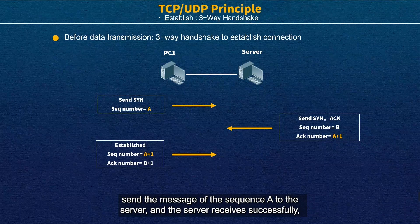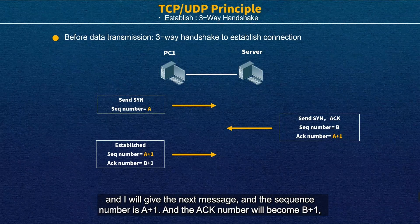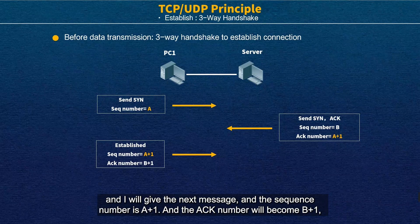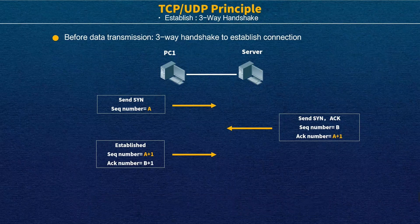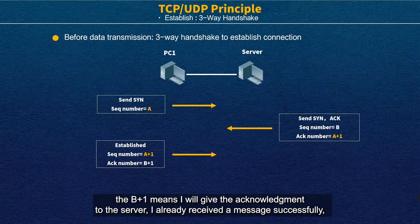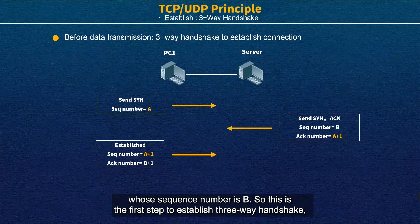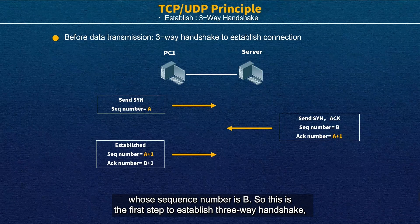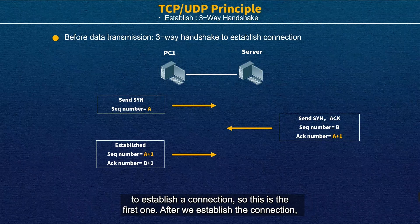The server received the message successfully. PC1 will give the next message with sequence number A+1, and the ACK number will become B+1. B+1 means the acknowledgement to the server: 'I already received your message with sequence number B successfully.' So this is the first step — the 3-way handshake to establish the connection.